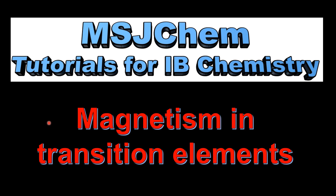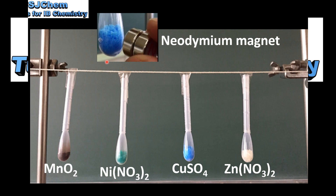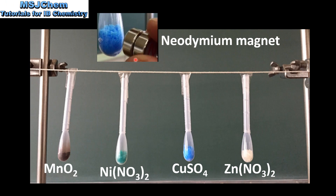This is MSJChem and in this video I'll be looking at magnetism in the transition elements. We'll be looking at the effects of a magnetic field from a neodymium magnet on four compounds: manganese dioxide, nickel nitrate, copper sulfate, and zinc nitrate.